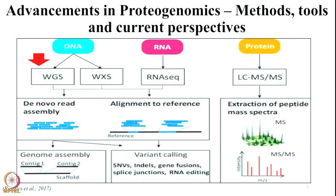First, I would like to explain what proteogenomics means and how one can use it for understanding the biology of an organism better. In a paper by Ruggles et al. in 2017, titled 'Advancements in Proteogenomics Methods, Tools and Current Perspectives,' they explained the three major parts of central dogma — that is DNA, RNA and protein — and how these three components can be used for further sequencing and analysis of an organism.